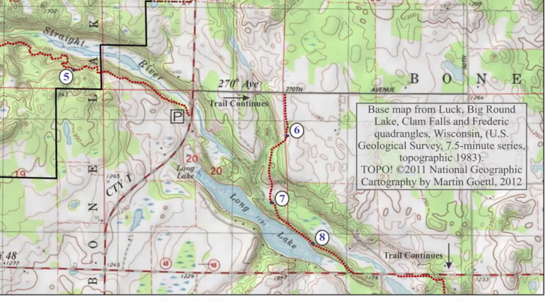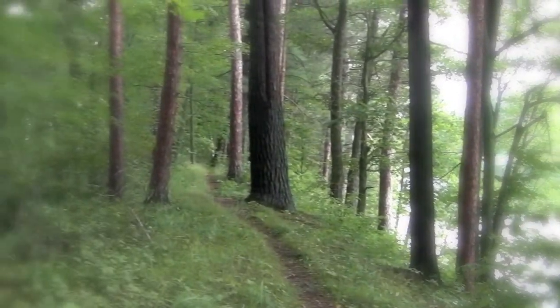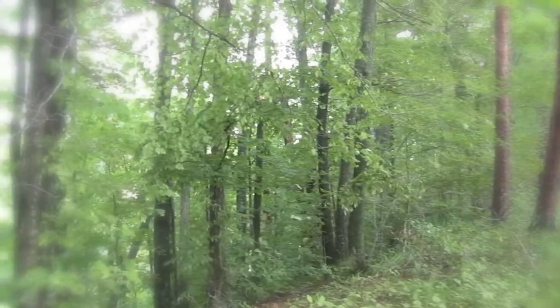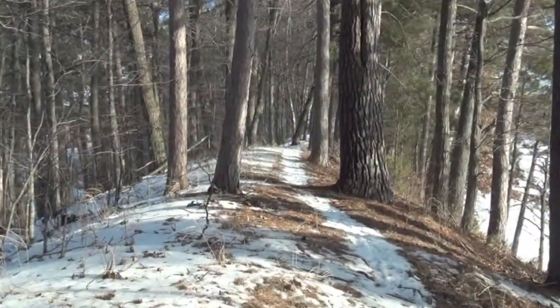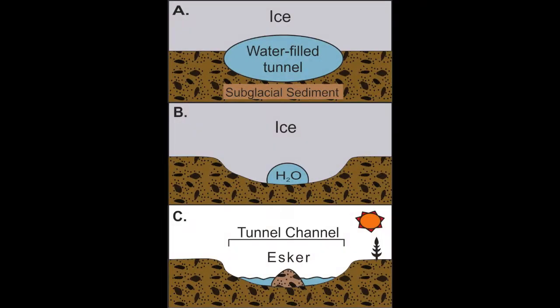To the south, across the swamp, rises the steeply sloping side of an esker. This classic 50-foot high esker segment is part of a 50-mile long esker located between Straight Lake and Big Round Lake. An esker is a long, snake-like ridge made of sand and gravel. This feature formed sometime after energetic meltwater eroded the Straight Lake Tunnel Channel.